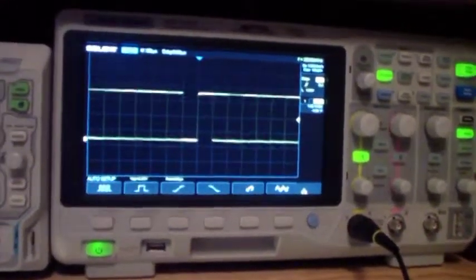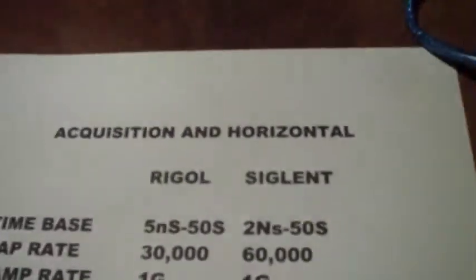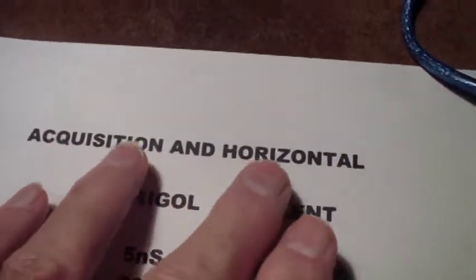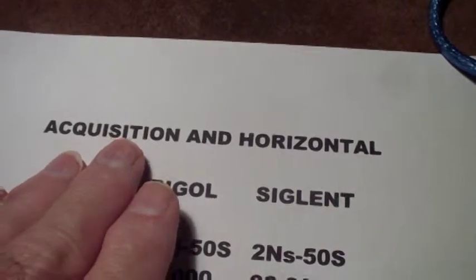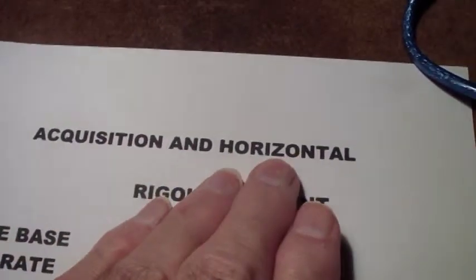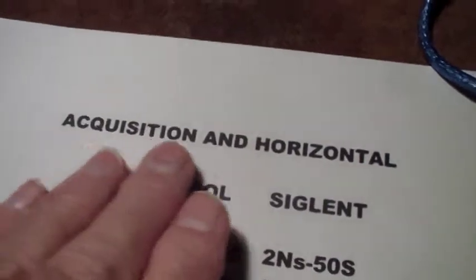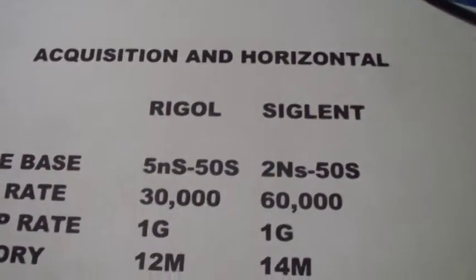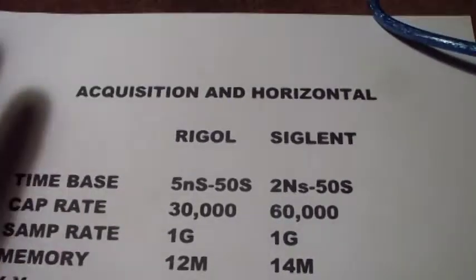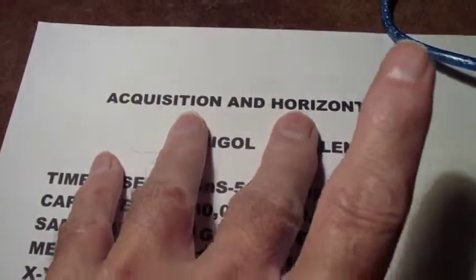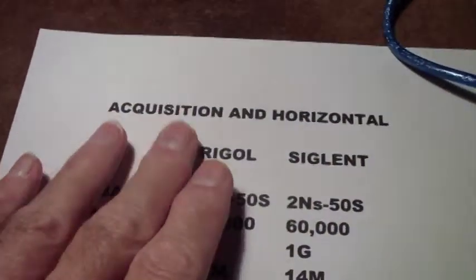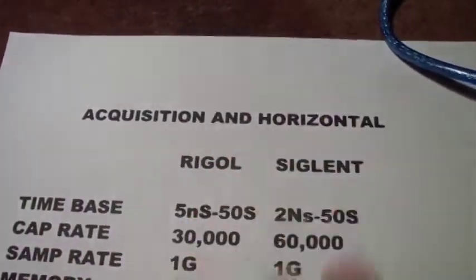I'm going to move on to acquisition and horizontal. I group these two together because they're very much the same thing — in fact some of the modes that the Siglent puts under acquisition the Rigol puts under horizontal. They basically are the time stamps — one, two, three, four across the screen. That's the acquisition; it's also the horizontal display.